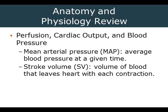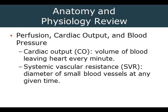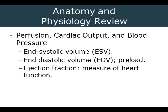Stroke volume is calculated by subtracting the end systolic volume from the end diastolic volume — also called the preload. A major measure of heart function is the ejection fraction, which is stroke volume expressed as a percentage of the end diastolic volume. Typically, people have an ejection fraction of 55 to 70%, meaning they eject 55 to 70% of that blood with each contraction.